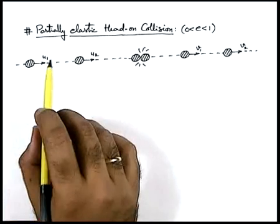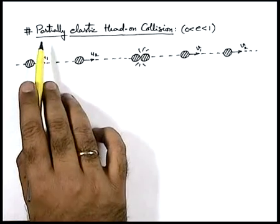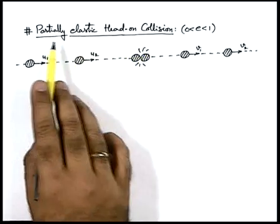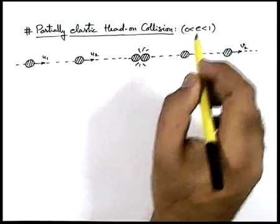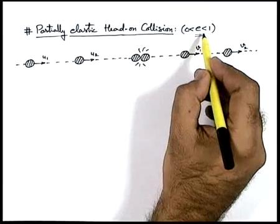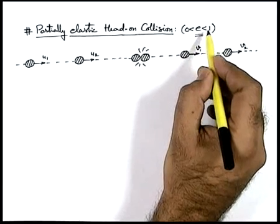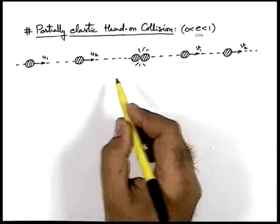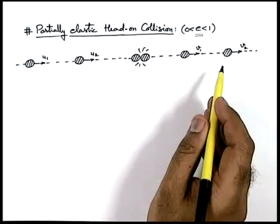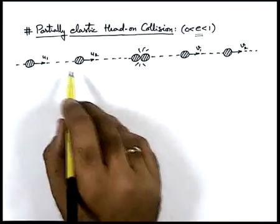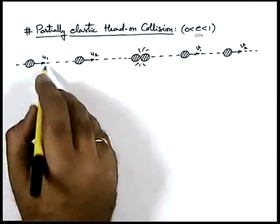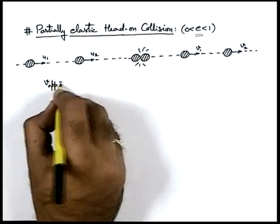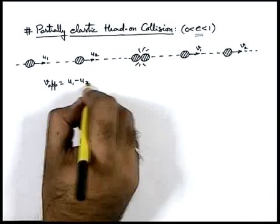Let us now check the situation of partially elastic head-on collision. As we have discussed, in case of partially elastic collision, the coefficient of restitution lies between the values zero and one. Now if this is a simple head-on collision, before collision, velocity of approach in this situation can be written as u-one minus u-two.